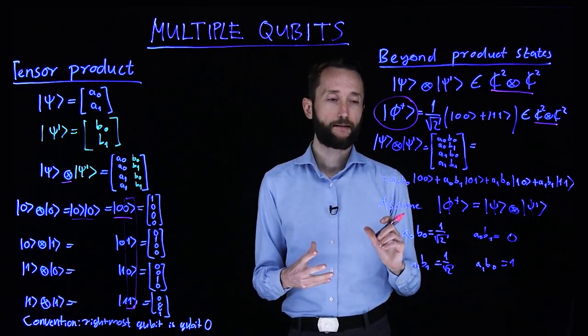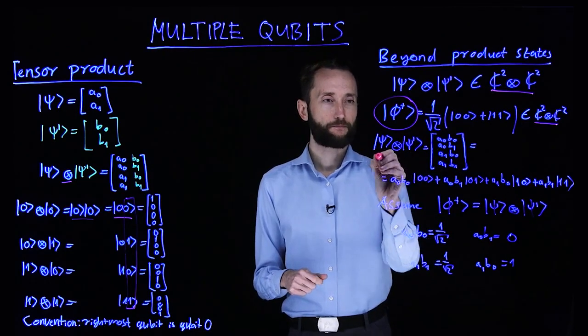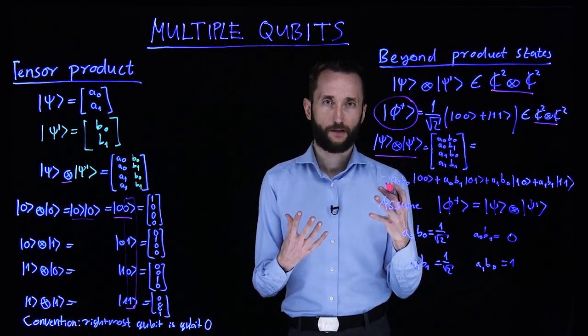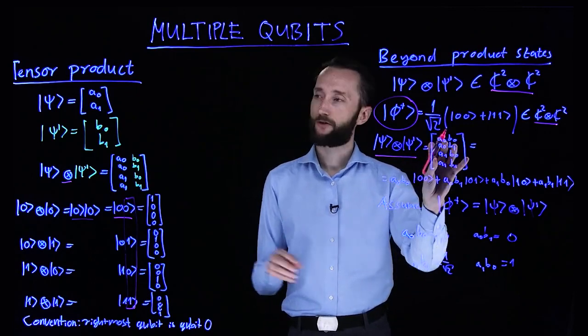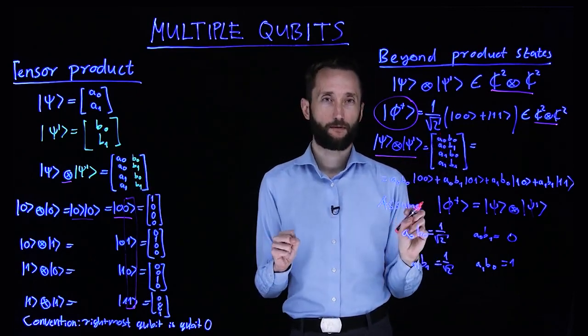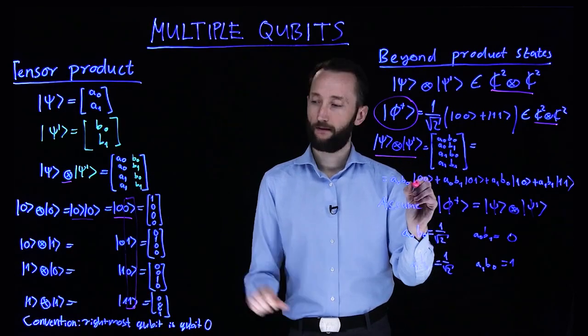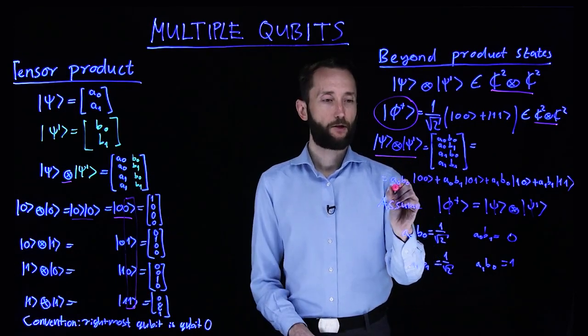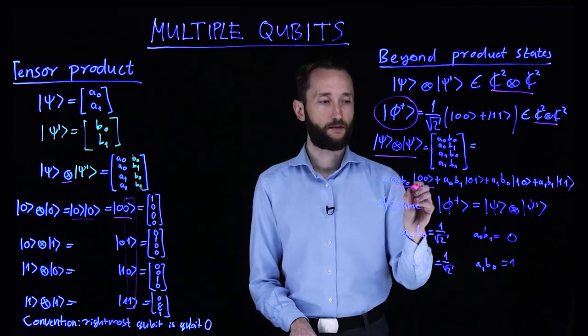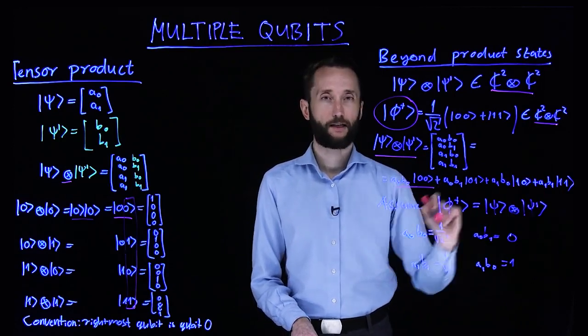And to see that, let's take a look at the general structure of this product vector. So I just copied the definition of the product vector here, and I wrote it down in the canonical basis. It would have a0 times b0 times the 0, 0 cat, and so on. It has four components.